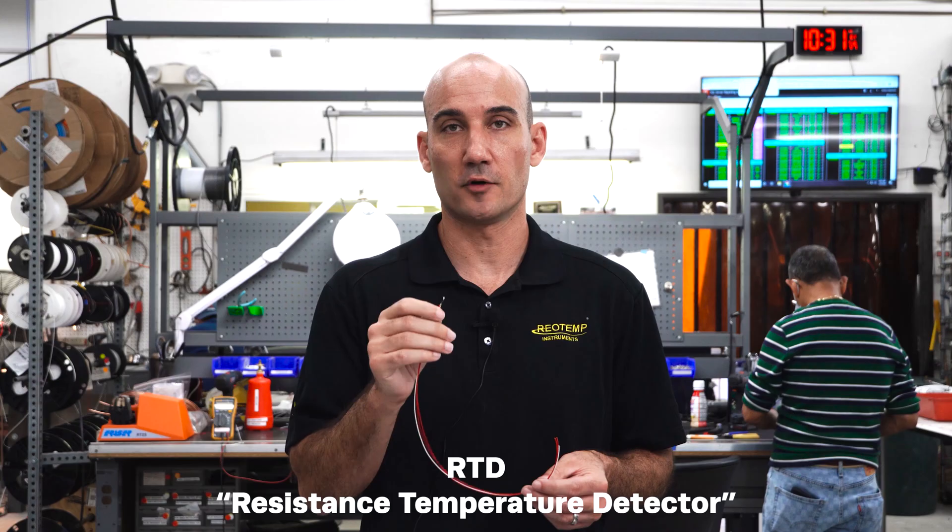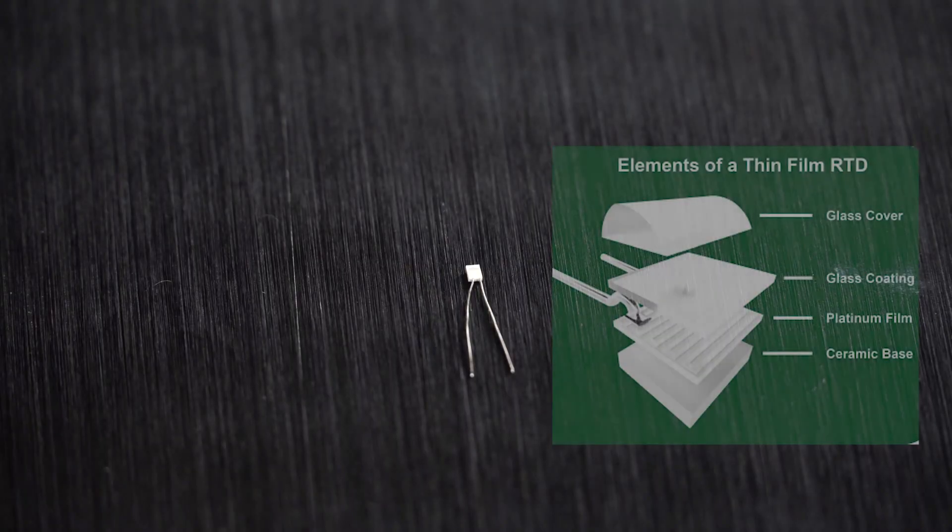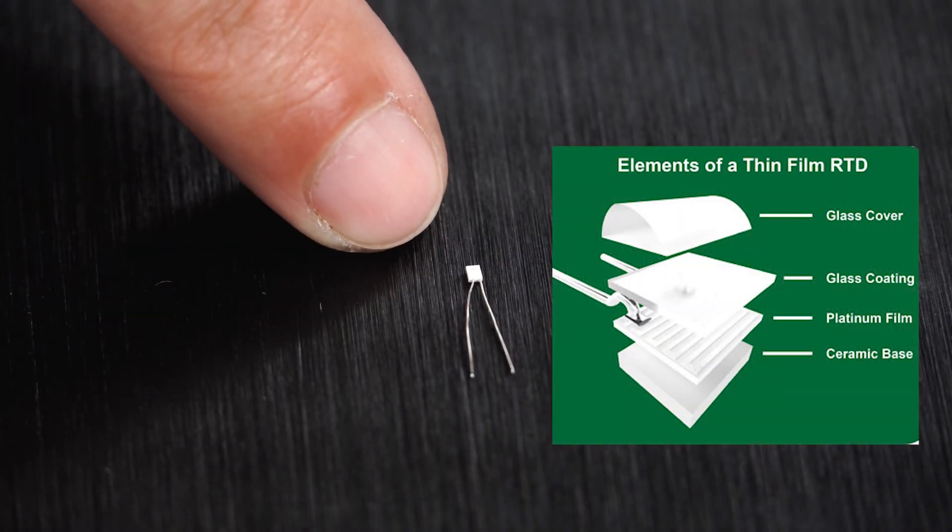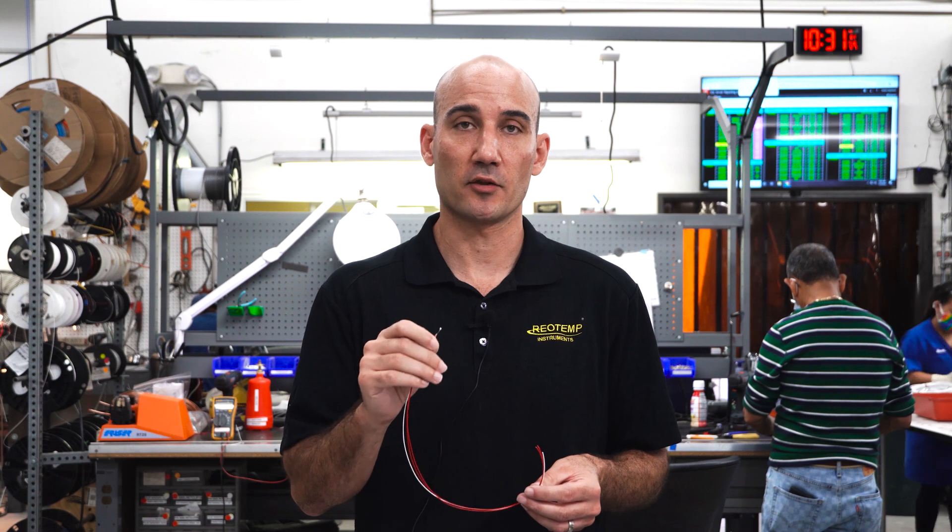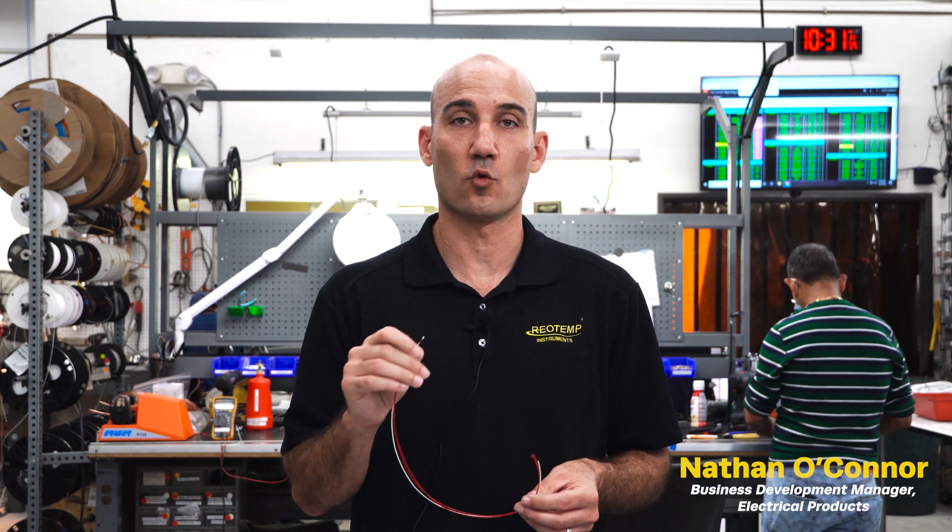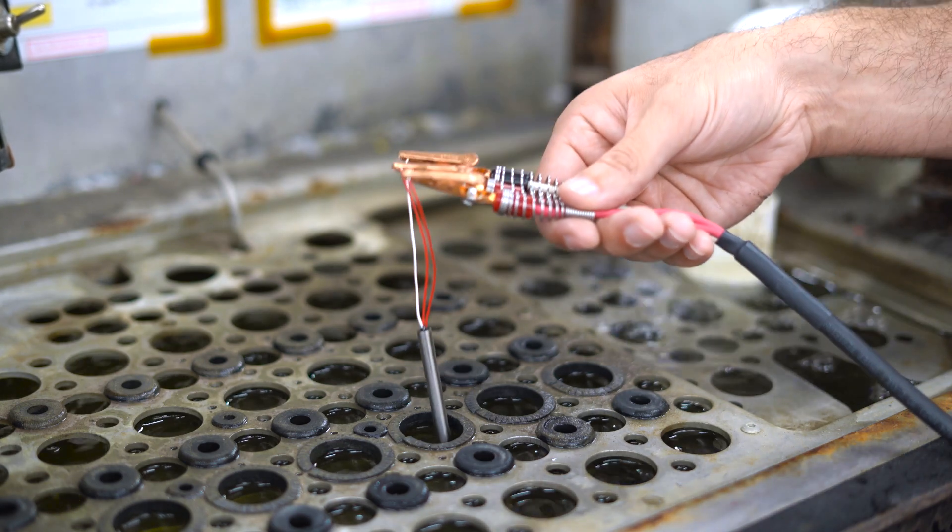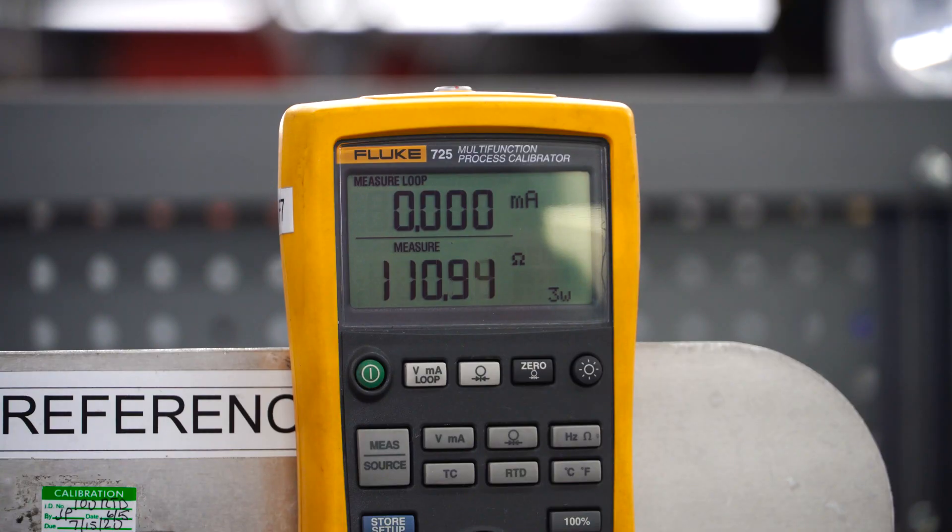First let's understand how an RTD works. This is a thin film 100 ohm RTD. Inside the ceramic housing there's a thin layer of platinum. That thin layer of platinum has a known resistance of 100 ohms at zero degrees Celsius. As the platinum heats up, that resistance is going to change in a very predictable and accurate way.